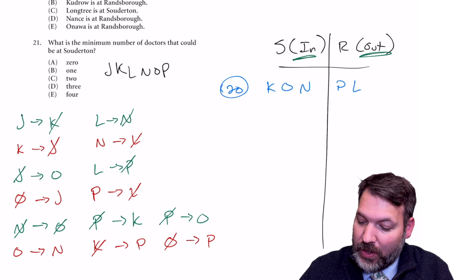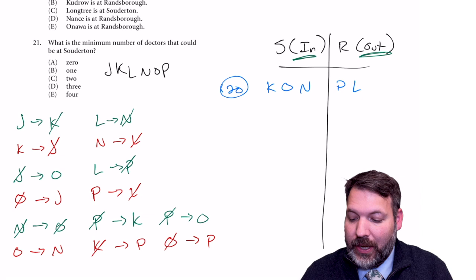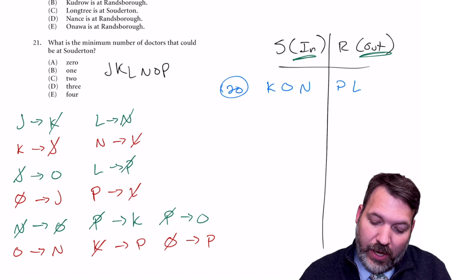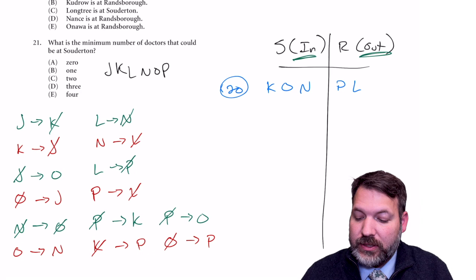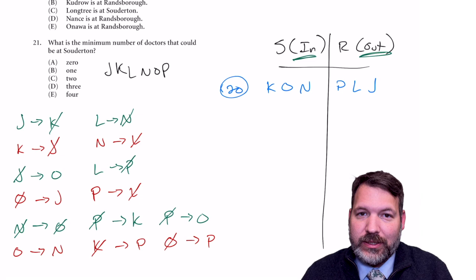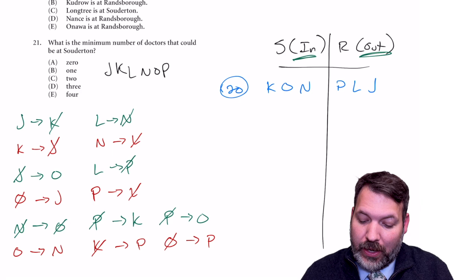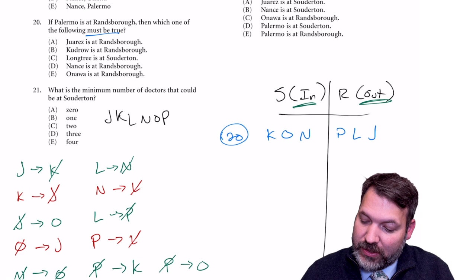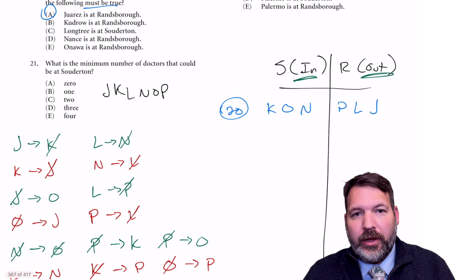The chain keeps going: when N is in, L is out; when K is in, J is out. We can place all six elements without having pre-built domino deductions. Answering question 20 — 'J is at Randsboro, must be true' — yes, answer 20 is A and we're done.